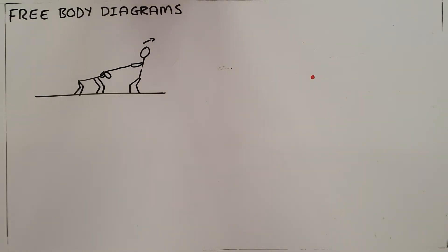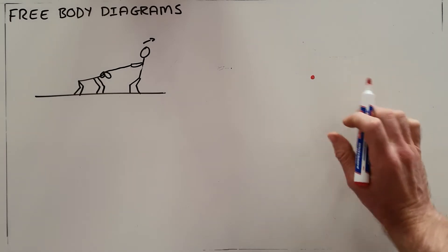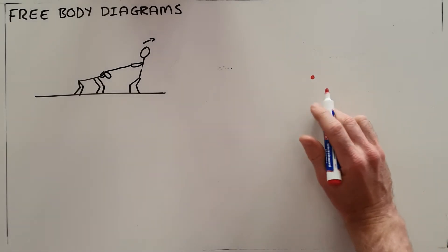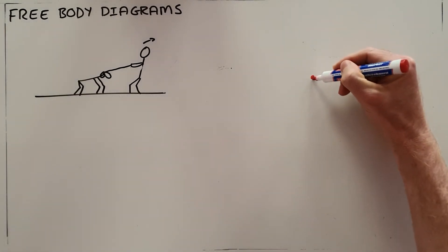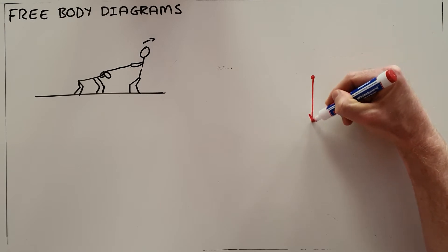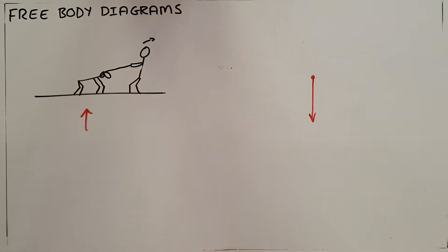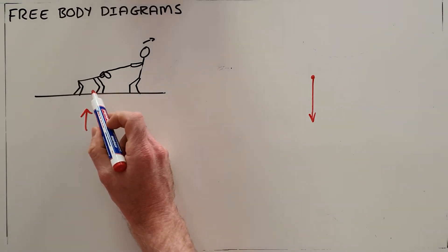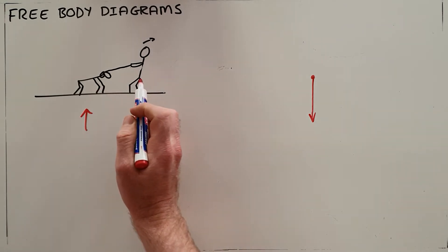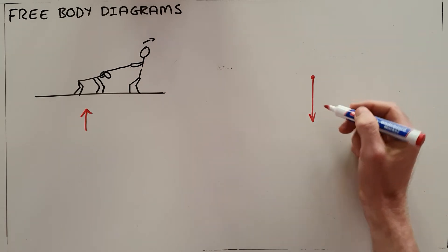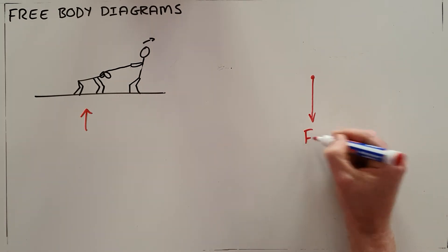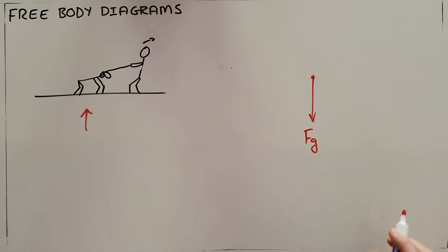All forces must be drawn pointing away from that center of mass. So for example, we know that the gravitational force acting on this object over here—we are dealing with this object over here. It is a dog that is being pulled by its owner, and there is a force of gravity that acts downward on the center of mass of this object.